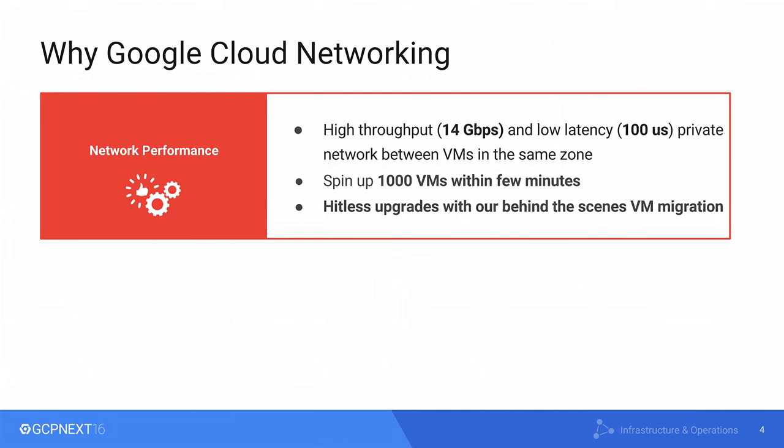Google networks are great. The performance is amazing. We can get 14 Gbps throughput, VM to VM, single zone. Similarly, we can achieve 100 microseconds round trip latency, VM to VM, single zone. This is very amazing. We will talk about how we are able to achieve this high throughput and low latency in the next slide.